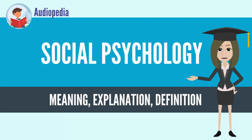Social psychology has traditionally bridged the gap between psychology and sociology. During the years immediately following World War II, there was frequent collaboration between psychologists and sociologists. The two disciplines, however, have become increasingly specialized and isolated from each other in recent years, with sociologists focusing on macro variables such as social structure to a much greater extent than psychologists.